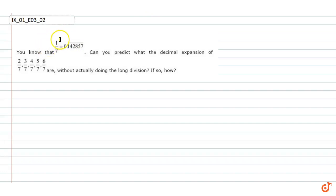In this question we know that 1/7 is equal to 0.142857 bar. Can you predict what the decimal expansion of 2/7, 3/7, 4/7, 5/7, up to 6/7 are without actually doing the long division? So how can we do it?